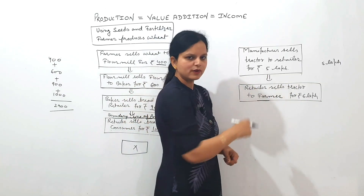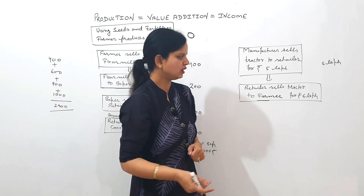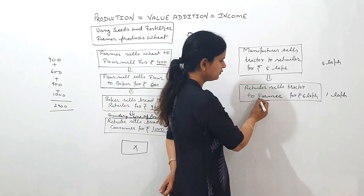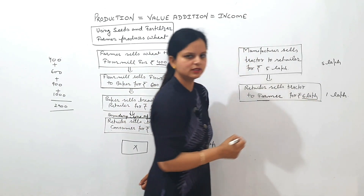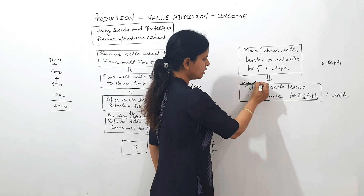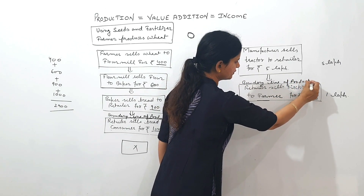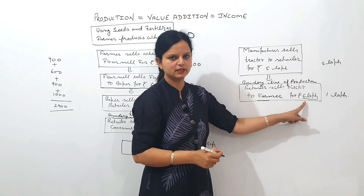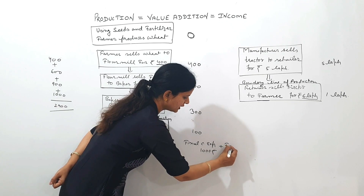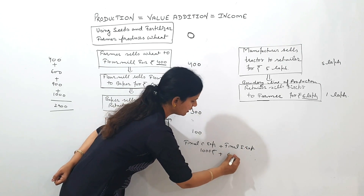The retailer purchased it for ₹5 lakh but sells it for ₹6 lakh because he provided the product to the final user at his own place — so he has also done value addition of ₹1 lakh. Now the good is with its final user and will not be resold. The good has crossed the boundary line of production. So only this amount will be considered as final investment expenditure — final investment expenditure is ₹6 lakh.